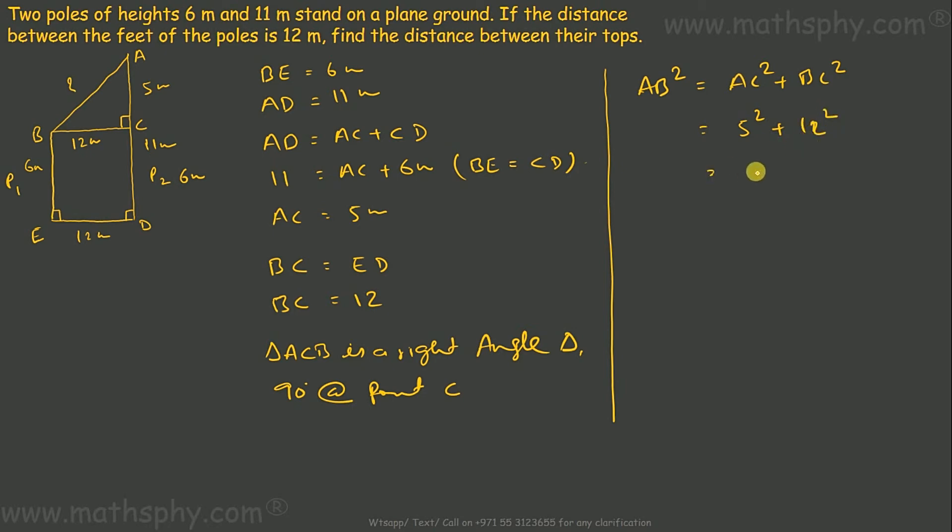So AB would be √169, which is 13. So this will be 13 meters. The distance between the tops would be 13 meters.